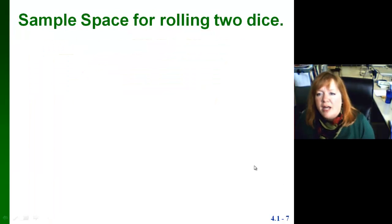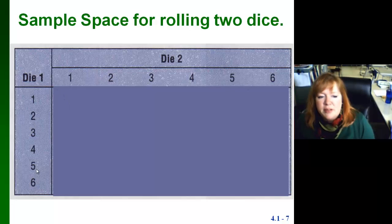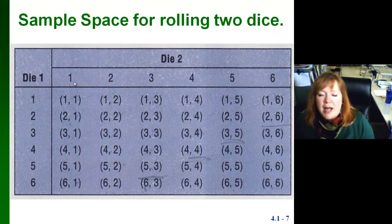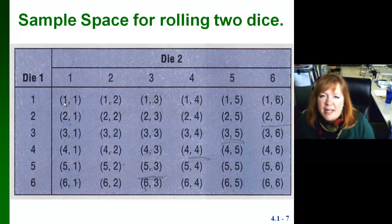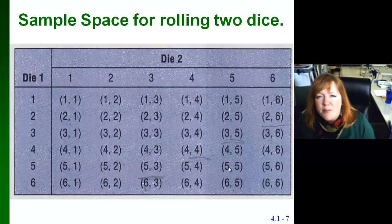Another example is rolling two dice. This one's not on your sheet, but I wanted you to see how to set up a sample space for such an endeavor. You have six possibilities for die one and six possibilities for die two. You could roll a one-one, a one-two, a one-three, and so on — or go twos across. These are all your different possible combinations. Setting up a table or grid helps make sure you get all possibilities accounted for.